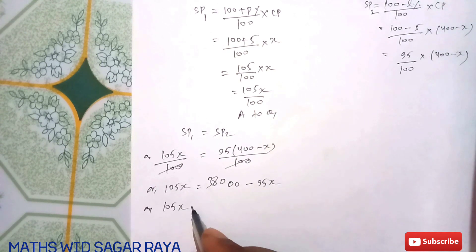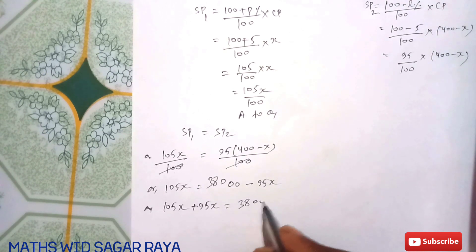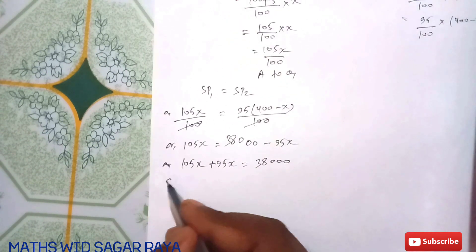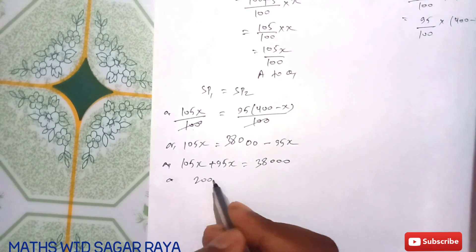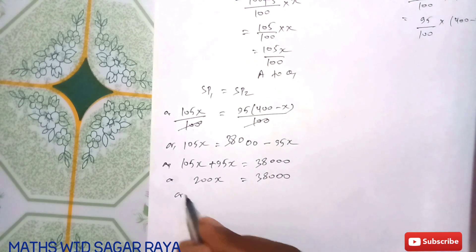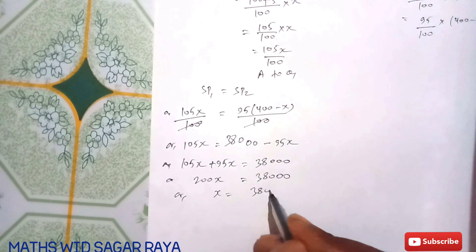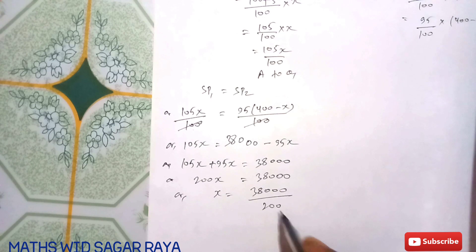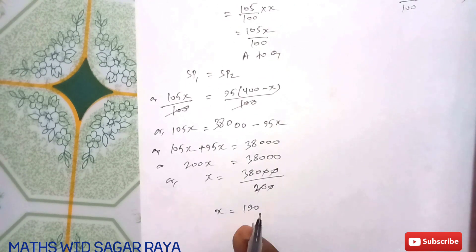105X + 95X = 200X = 38,000. So X = 38,000 / 200 = 190.